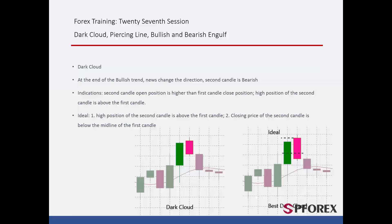The analysis of Dark Cloud Candles is based on the last two candles. If the open price of the second candle is above the close and high price of the first candle respectively, then a dark cloud pattern is formed. The ideal form is when the close price of the second candle is lower than the midpoint of the first candle body, and the open price of the second candle is higher than the high price of the first candle.